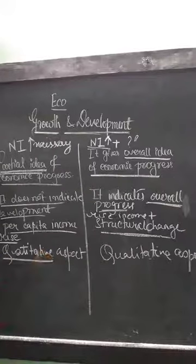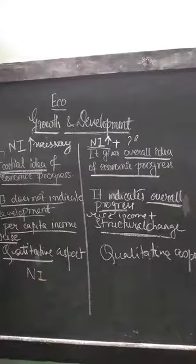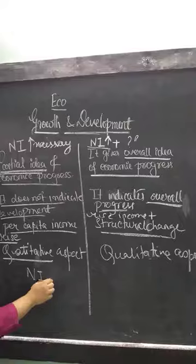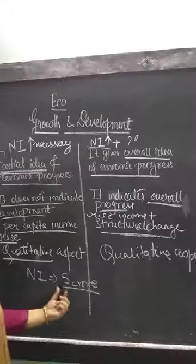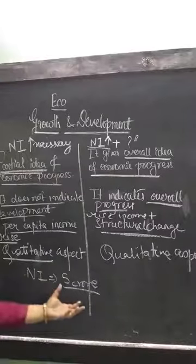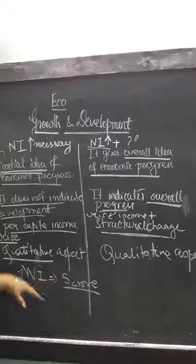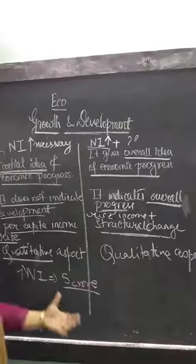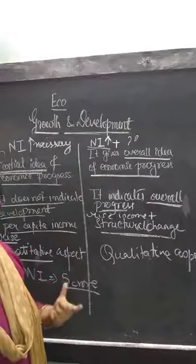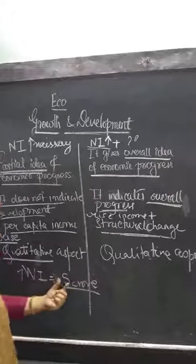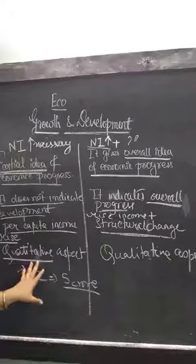Growth is a quantitative aspect. Quantitative means national income can be measured in money terms — anything that can be quantified. For example, I can say the national income of the country grew by 5%, so that is quantifiable. I can assign some numerical value to understand how much income has been received and how much income rise has taken place. So growth only highlights the quantitative aspect of economic progress — if income grows by a numerical value, we can understand how much it is growing.